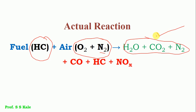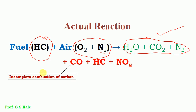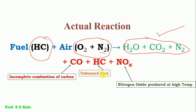However, in actual cases this ideal reaction does not fully happen. In addition, other pollutants also form: CO, HC, and NOx. CO forms because of incomplete combustion of carbon. HC appears at the engine exit due to unburned fuel. Nitrogen oxides are produced at high temperatures. These three — CO, HC, and NOx — are considered serious pollutants that must be controlled, unlike H2O, CO2, and N2.